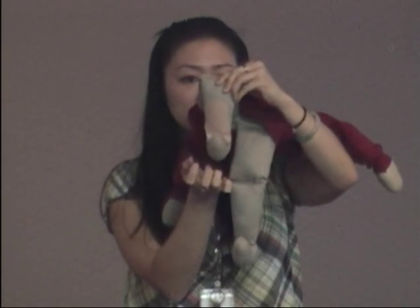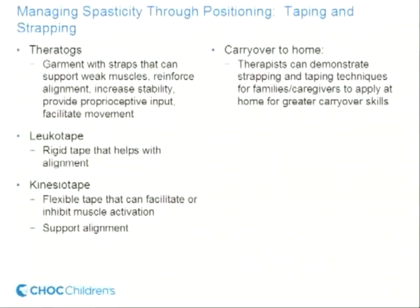KinesioTape is a really flexible tape that helps either support or inhibit muscles. For example, here we put it right over the feet for more dorsiflexion. We also have it on ourselves to demonstrate. Most kids tolerate this fairly well, though some are more sensitive on their skin — there may be some redness, and there are techniques to help avoid skin irritation. Depending on the line of pull, this is going to facilitate supinating the hand — turning it over — which helps with grasping.